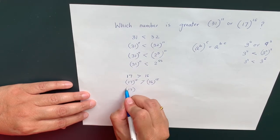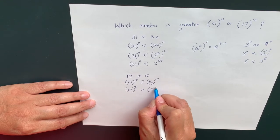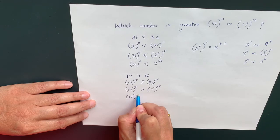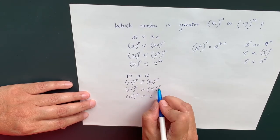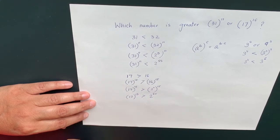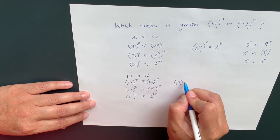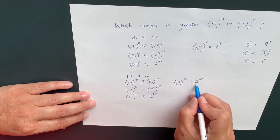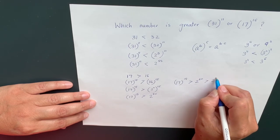17 to the power of 15 is greater than 2 to the power of 4, which is 16, to the power of 15, which equals 2 to the power of 60. We know 2 to the power of 60 is greater than 2 to the power of 55.